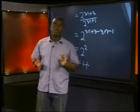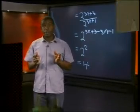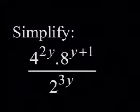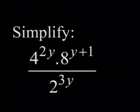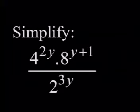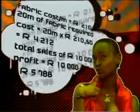We have managed three examples of simplifying expressions in this lesson. Now it is your turn. Your task today is to simplify 4 to the power of 2y times 8 to the power of y plus 1, divided by 2 to the power of 3y, and write down what you did in each step. Join me in the next lesson where we'll try to simplify some more expressions involving exponents. Until then, cheers. See you next week.